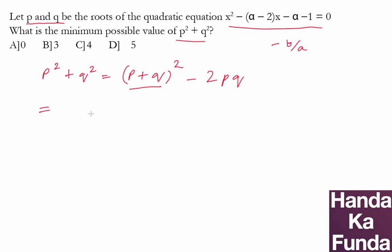So in this case it becomes alpha minus 2 whole square, and then product of the roots PQ is given by C by A, which is minus alpha minus 1 in this case. So this will be minus 2 into minus alpha minus 1.